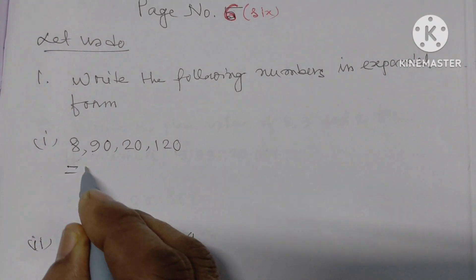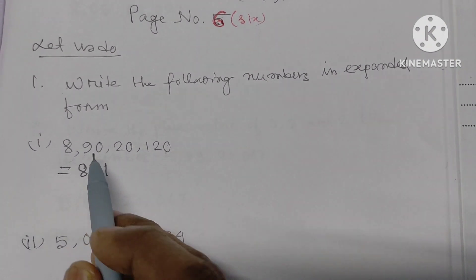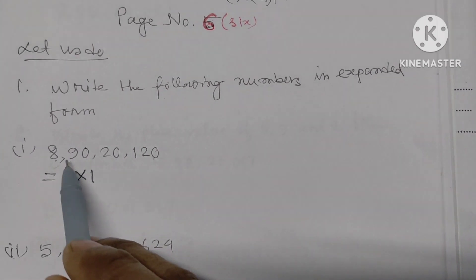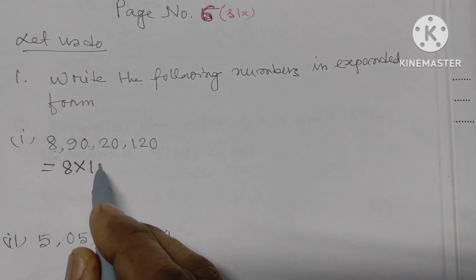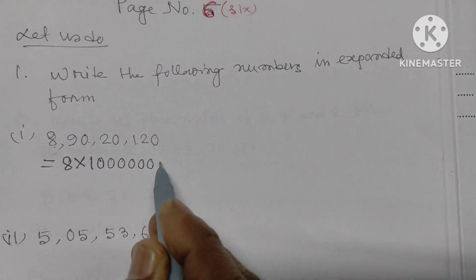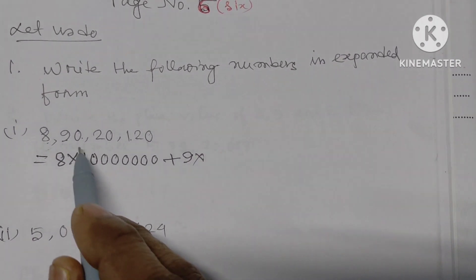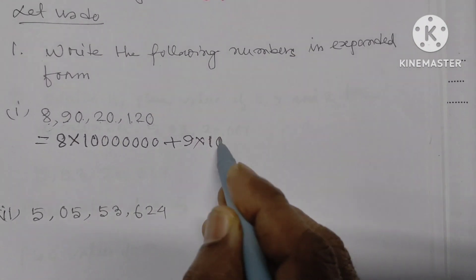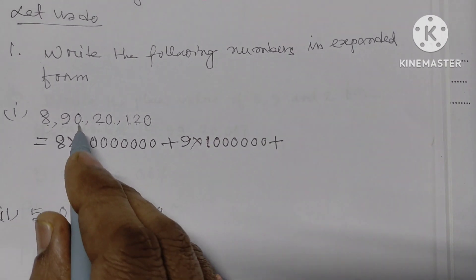So we have to do this. We write 1 into its place value. Then if we are doing 1,000 and 1,00,000, this is how we can do it. We count the digits after the number: 1, 2, 3, 4, 5, 6, 7. Then 9 into its place value: 1, 2, 3, 5, 6, 7. Plus 0.